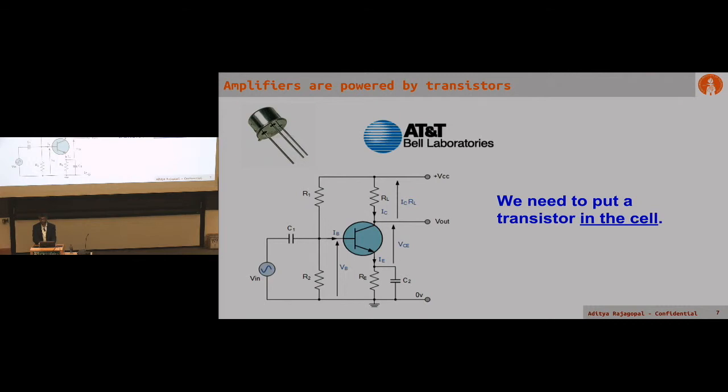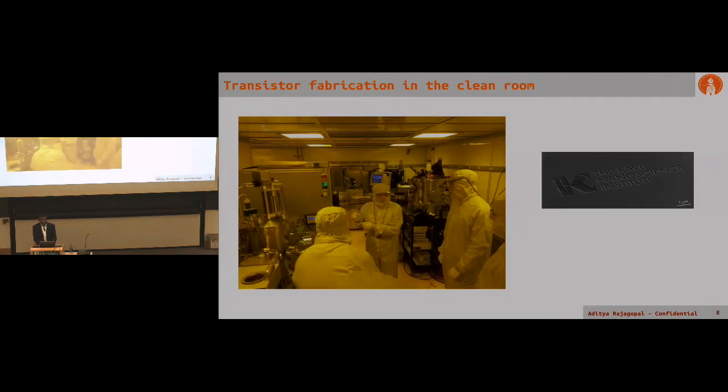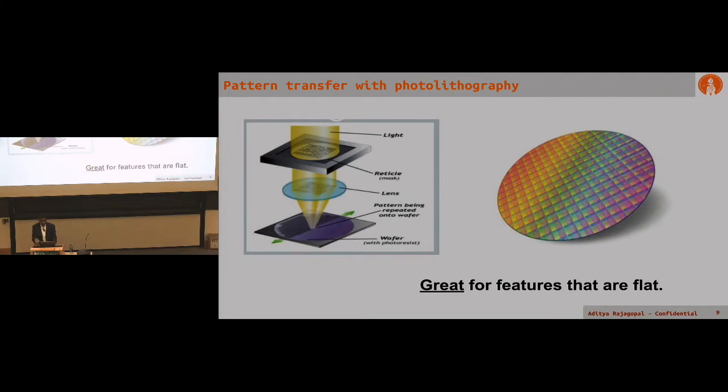The best amplifier we could think of was a Bell Labs invention that's become ubiquitous: the transistor. It's a device that very effectively lets us amplify voltage signals or convert between current signals to voltage signals. We figured we had to build a transistor to fit it inside the cell.